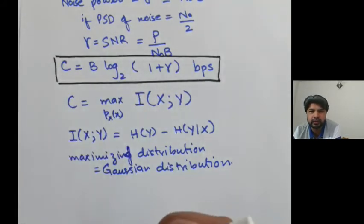Which is B log base 2 of 1 plus signal to noise ratio, bits per second. That was for a Gaussian channel.